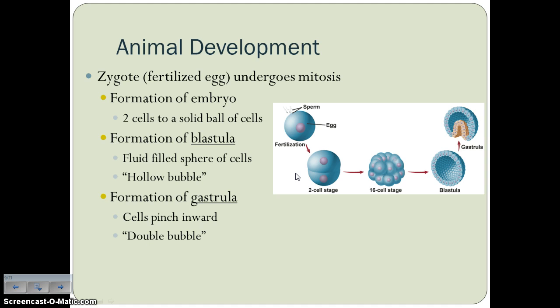After fertilization occurs, the zygote undergoes mitosis — the cell starts to divide. Once it's divided into two cells, that's called the embryo. From two cells up through about the 16 to 20 cell stage, that is the embryo. Once you have a hollow sphere of cells, that is called the blastula — sort of like a hollow bubble. Then that blastula starts to pinch inward, and that is called the gastrula, sometimes called the double bubble stage.